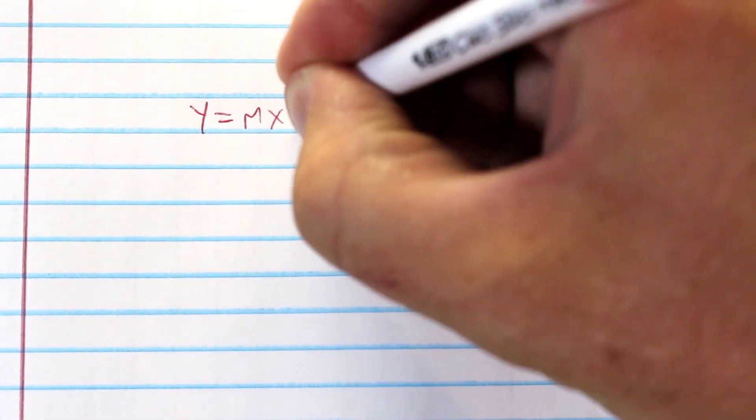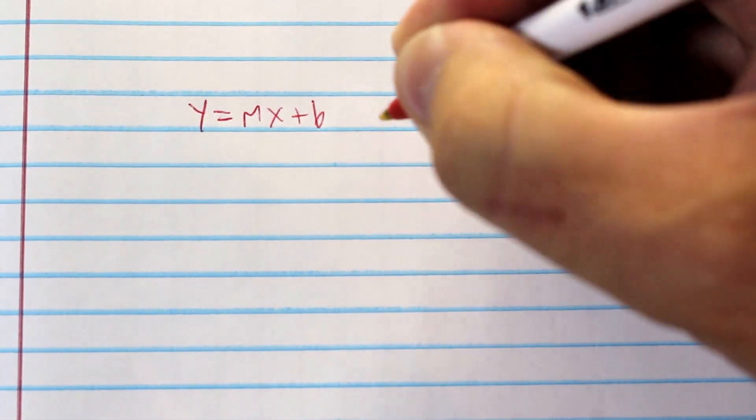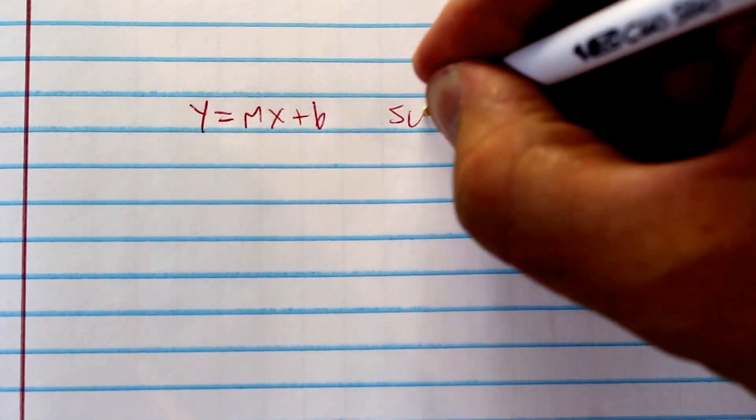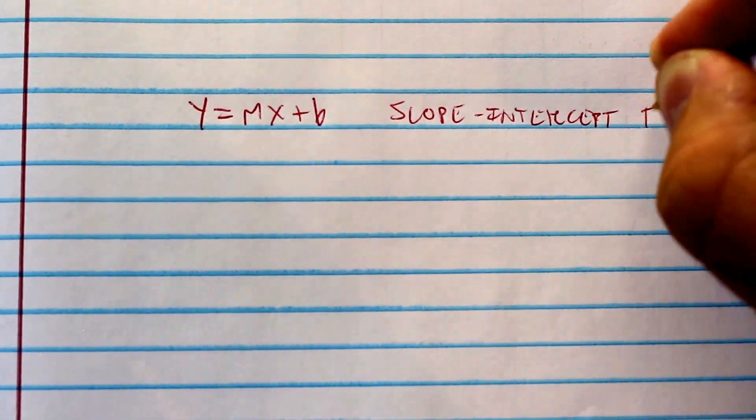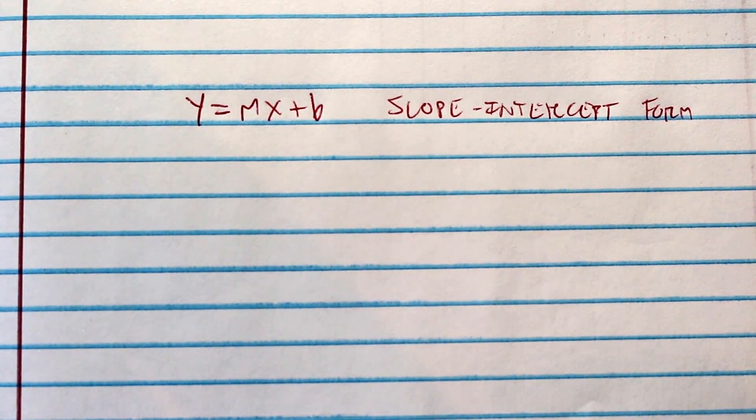So the equation of a line is y equals mx plus b. You've probably seen this or heard of this. This is called slope-intercept form, and this is the form the equation needs to be in to find the slope.